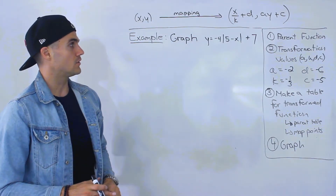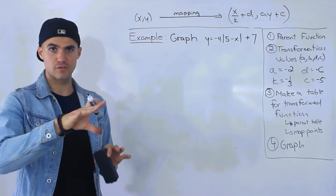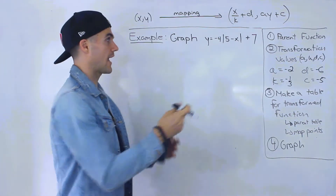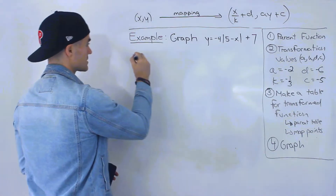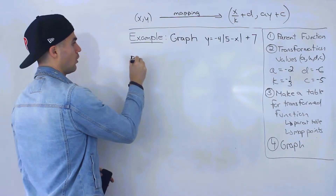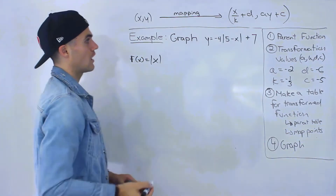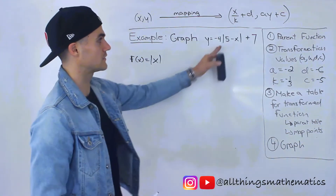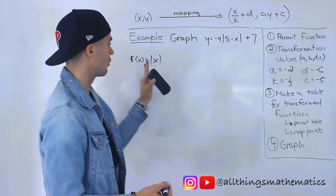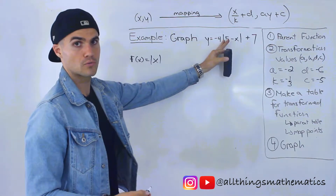Notice that in this case the parent function and the transformations are combined. The parent function, hopefully you could tell, is the absolute value of x. We've got these absolute values here, so this got transformed.